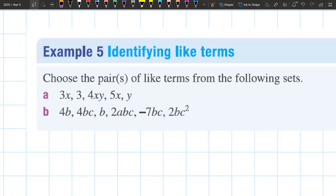What I want to do is find the terms that have the exact same pronumeral factors. Let's have a look at the first term. I've got 3x. I'm going to write the x out.